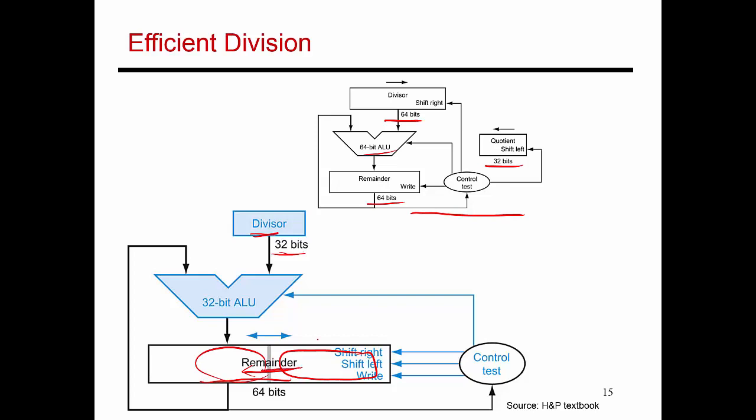As you keep shifting this remainder value to the left, it creates some free space over here, and that's where you place the quotient. So you get rid of this separate storage over here. You make the ALU 32 bits instead of 64 bits, and the divisor register gets converted from a 64-bit register to a 32-bit register.